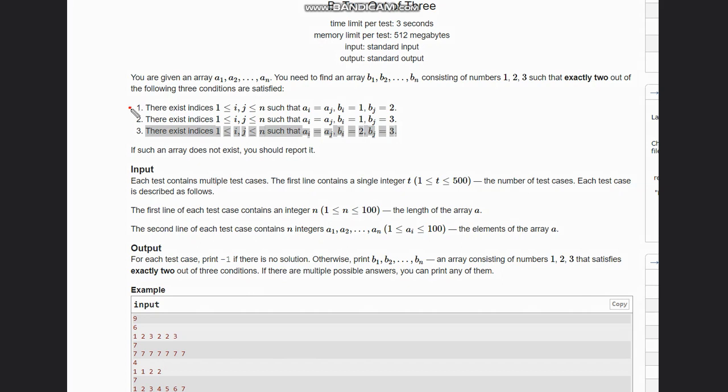So out of these three conditions, if I select two conditions, then the third must not be satisfied. We need to check for that as well. If such an array does not exist, you should report it by printing